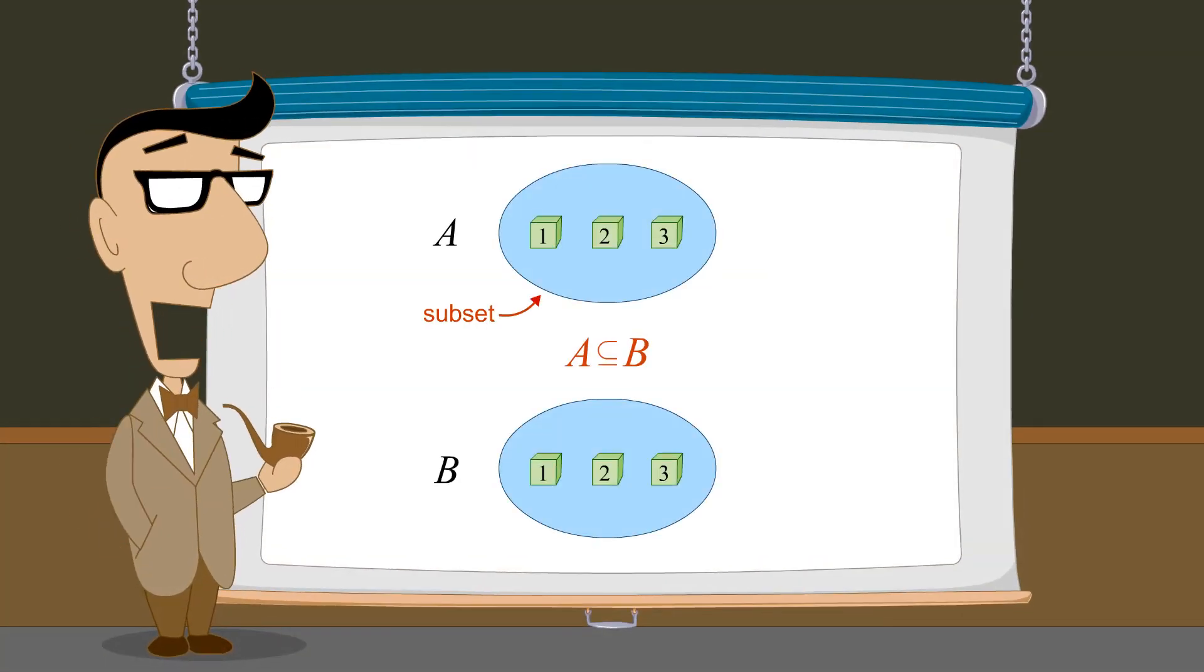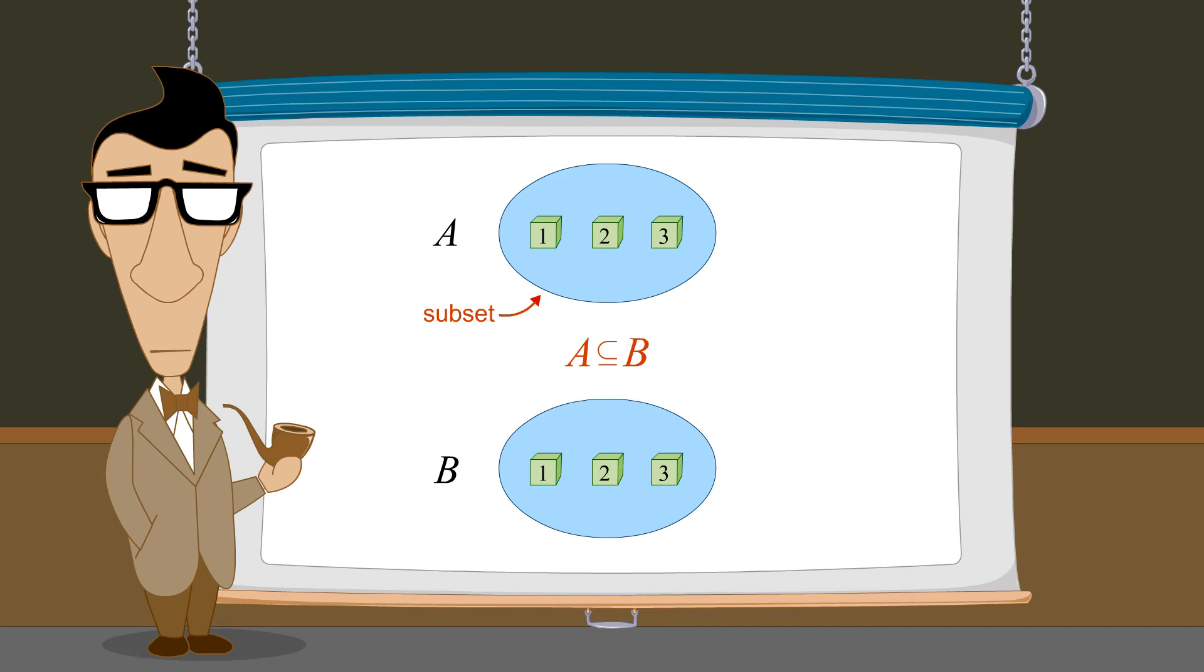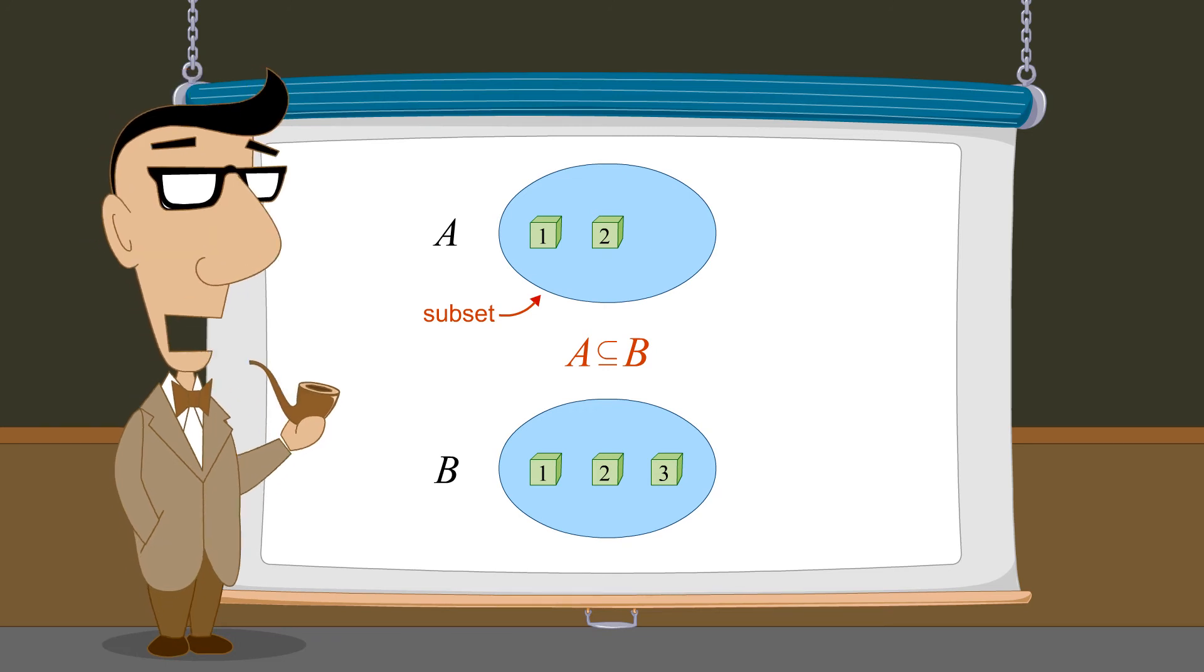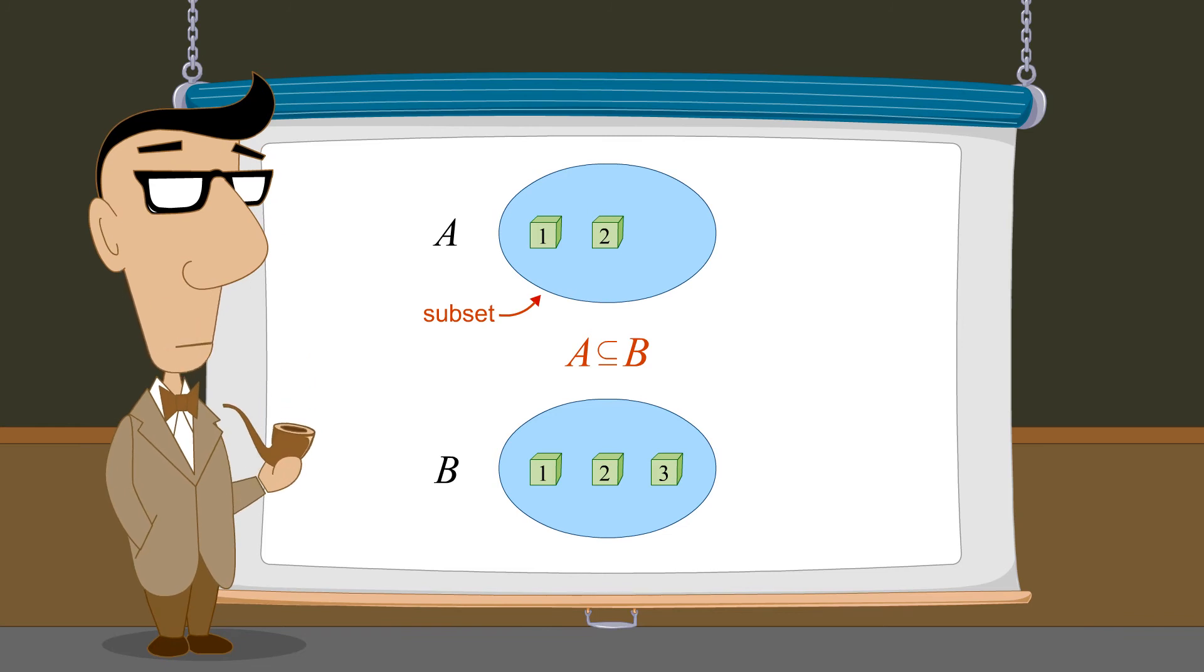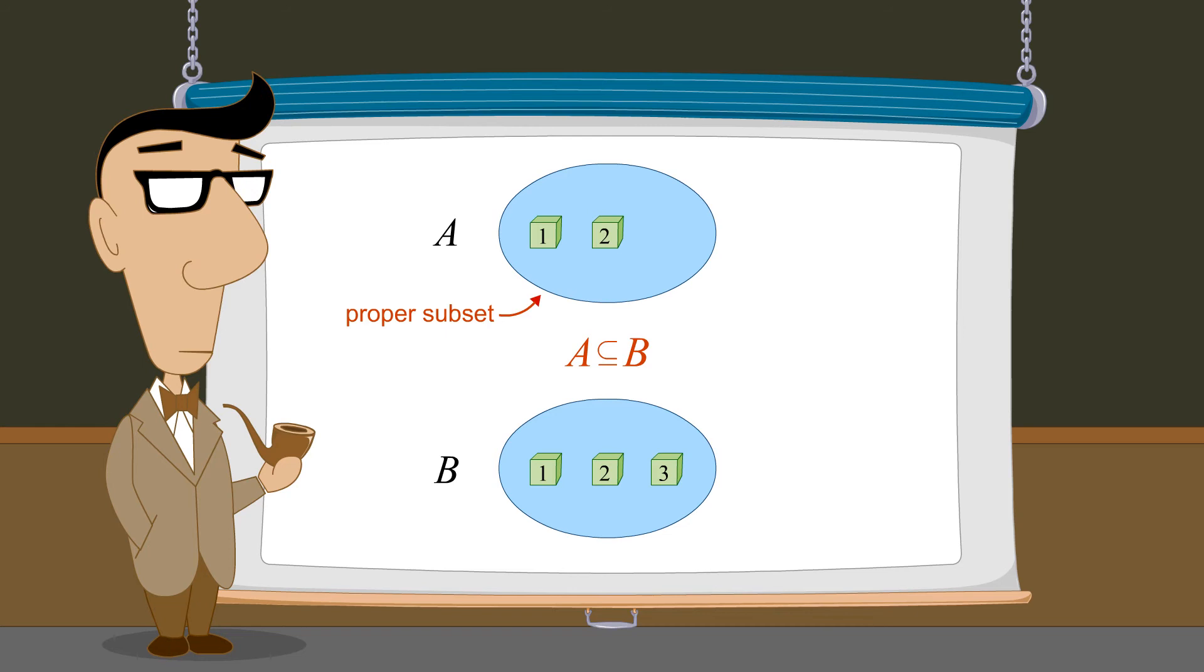So the subset symbol can be used whenever all the elements of A are also members of B, whether A has the same number of elements as B, or has fewer elements. But when A has fewer elements, we can be more specific and call A a proper subset of B. We denote this using the proper subset symbol, which is the subset symbol without the line underneath.